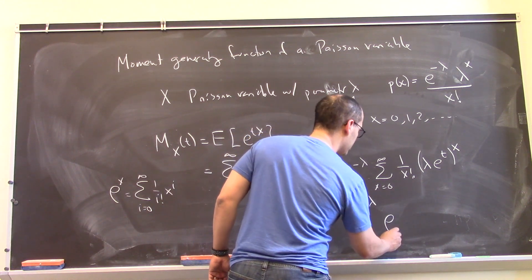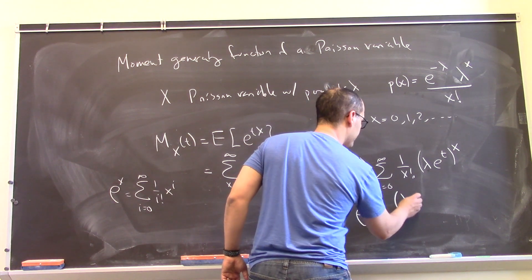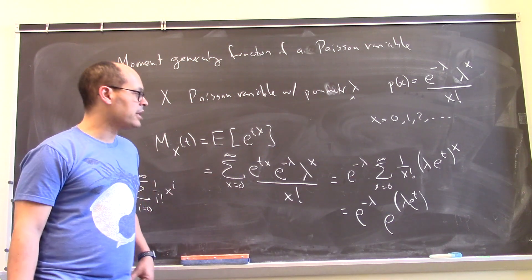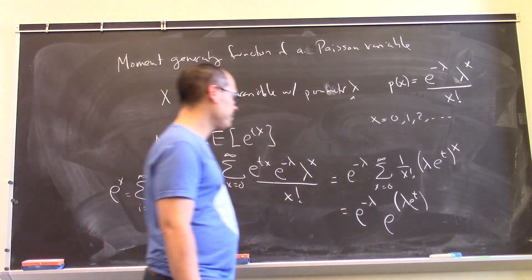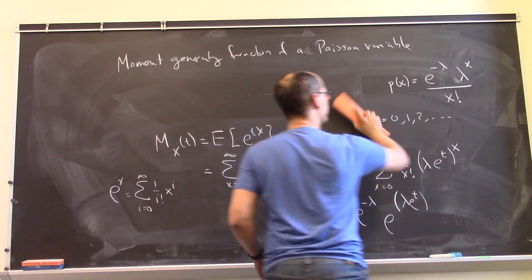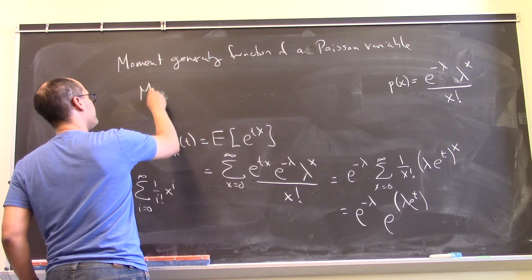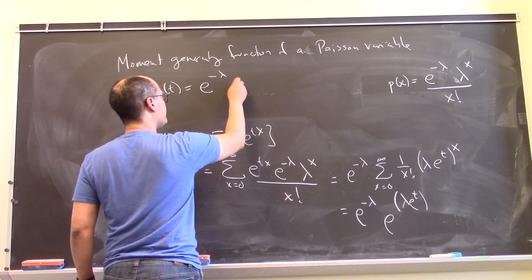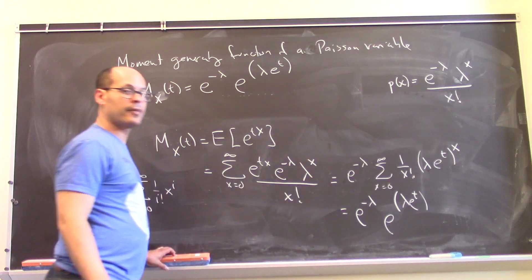This is e to the this. So it's e to the minus lambda times e to the power lambda e to the t. Okay, so that's my moment generating function. So let me go ahead and write that here. This is e to the minus lambda e to the lambda e to the t.